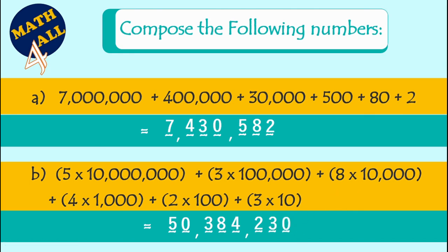Now let's read the result: fifty million, three hundred eighty-four thousand, two hundred thirty. And this is how we compose numbers — we just put all the numbers together.